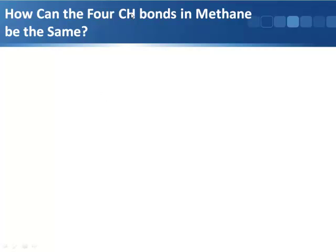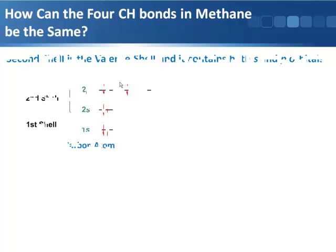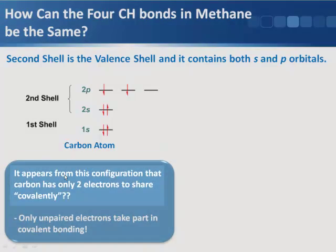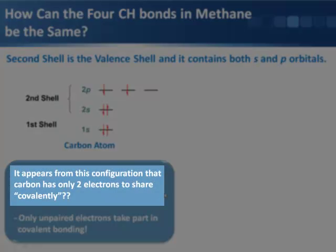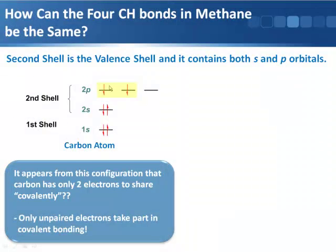How can the four carbon hydrogen bonds in methane be the same? Because when you look at the electron configuration, this does not explain the type of bonding that we actually see in methane. It appears in this configuration that the carbon has only two electrons to share covalently. Because these electrons are paired up in a nice full orbital and they don't want to disrupt the system. They're quite happily paired up and very stable.